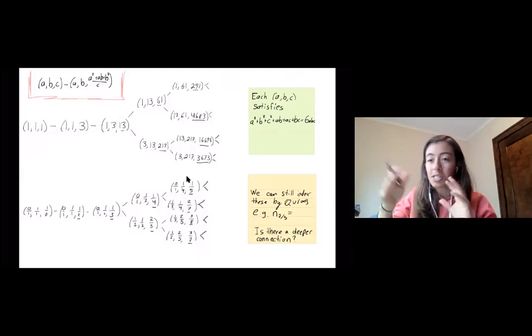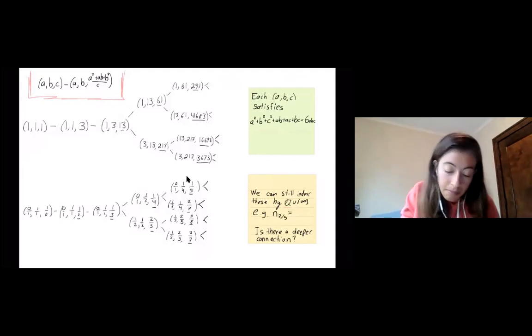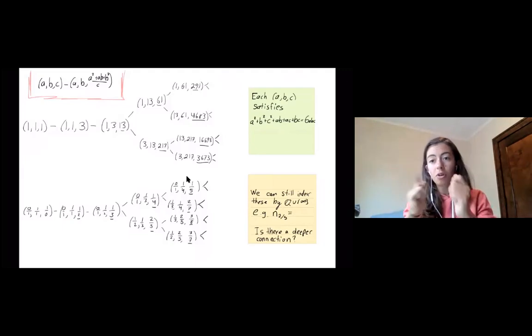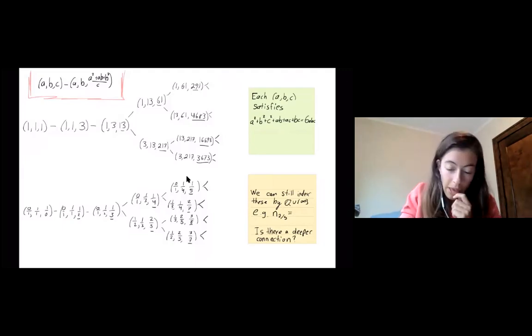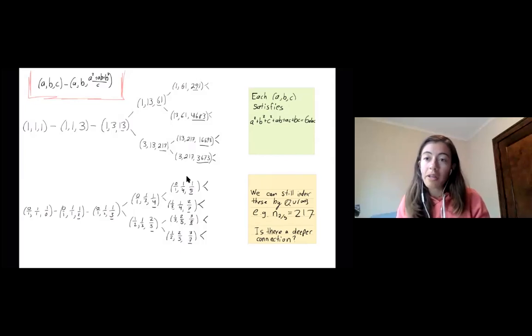And since this procedure makes this sort of tree structure again, we can still label these by these rational numbers using the same, yeah, all the same ideas. So now I'm going to use n's so that we don't confuse them with the normal Markov numbers. So n25 will be 217. But yeah, but we won't just, again, be artificial about it. We'll see how we can play the similar combinatorial games as before. But now life is a little harder because we're in an orbifold.